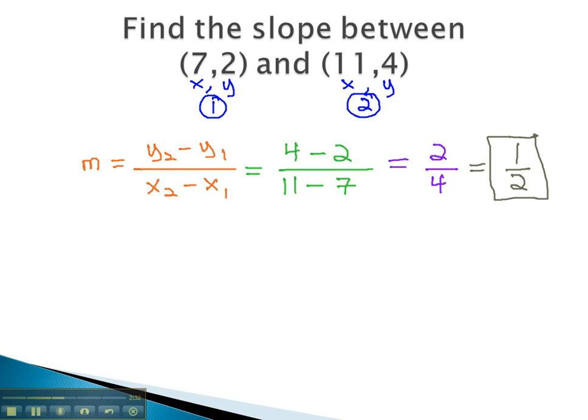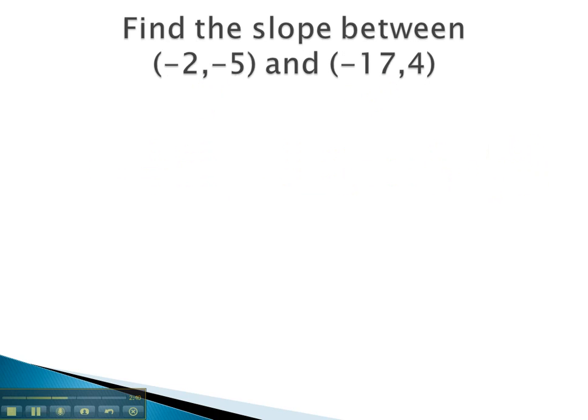Let's take a look at another example, where we find the slope between two points using the slope formula. Here we have two new points. Negative 2, negative 5 is our first x comma y, our first point.